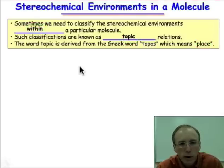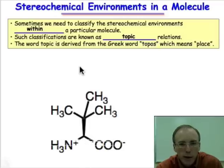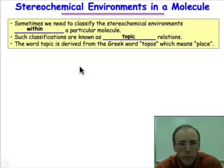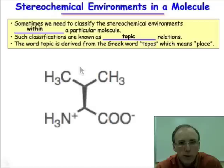We've actually already addressed this question. For example, at the beginning of the webcasts on stereochemistry, we talked about 3-methylvaline. The three different methyl groups in 3-methylvaline we found to be stereochemically equivalent. And we also concluded that in the case of valine, the two different methyl groups — for reasons we'll learn about in the next webcast — were stereochemically not equivalent.